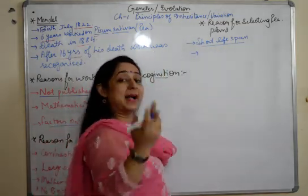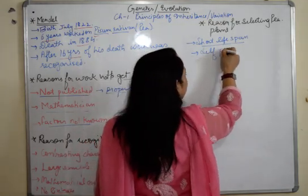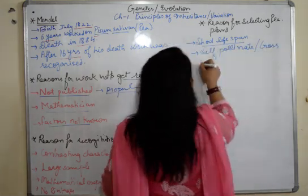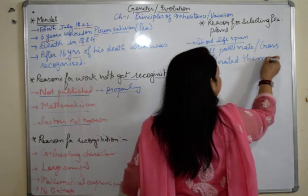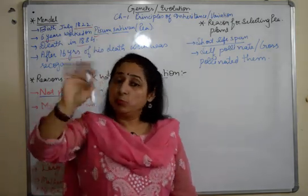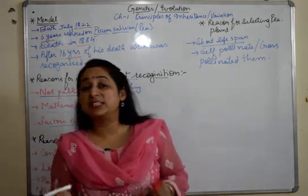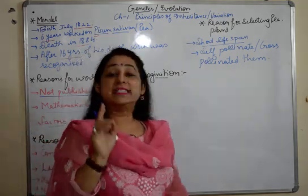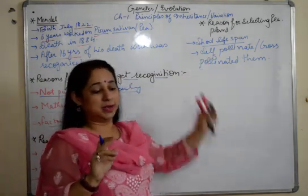Second, the pea plant produces bisexual flowers, meaning it can self-pollinate naturally. Additionally, by artificially removing the pollens and shedding them onto the stigma, he could also cross-pollinate them. So he could study both self-pollination and cross-pollination on the same plant, which was a very important factor for selecting the pea plant.